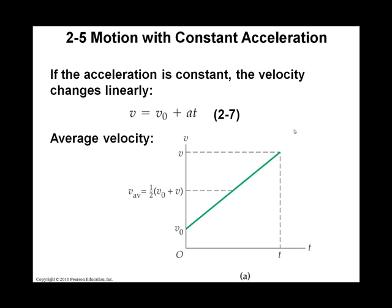So our first kinematic equation is an equation for the velocity of an object at any instant in time, if you know its initial velocity. Final velocity equals initial velocity plus acceleration times time.